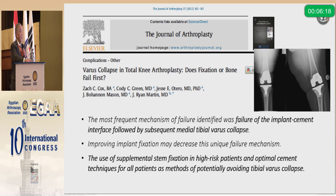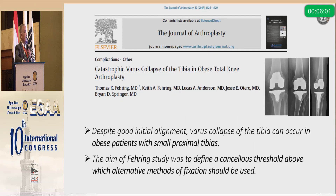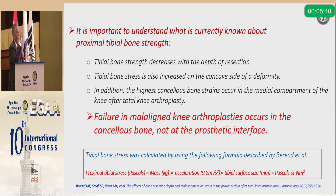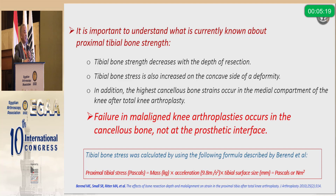Varus collapse is the most frequent mode of implant failure — a cement-bone interface failure with subsequent tibial varus collapse. Improved fixation through a short stem would decrease this incidence. Varus collapse in obese patients is a catastrophic failure; despite good alignment, varus collapse of the tibia occurs in obese patients with a small proximal tibia. Tibial bone strength decreases with depth of resection, and tibial bone stress is also increased on the concave side of deformity. The highest cancellous bone strain occurs in the medial compartment after total knee arthroplasty, and failure in a malaligned knee occurs in the cancellous bone, not at the prosthetic interface.